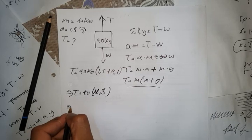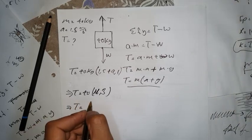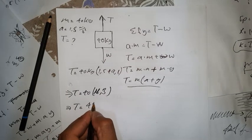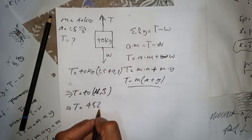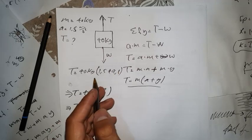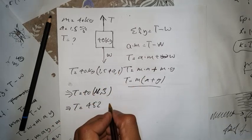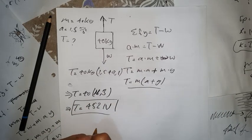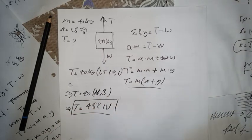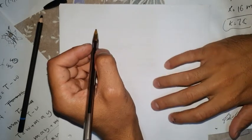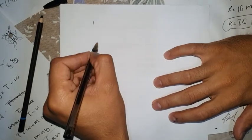Adding 1.5 and 9.8 gives 11.3. Multiplying 40 kilograms by 11.3 gives 452 newtons. The kilogram and meters per second squared combine to give newtons. So the final answer for the tension force is 452 newtons.